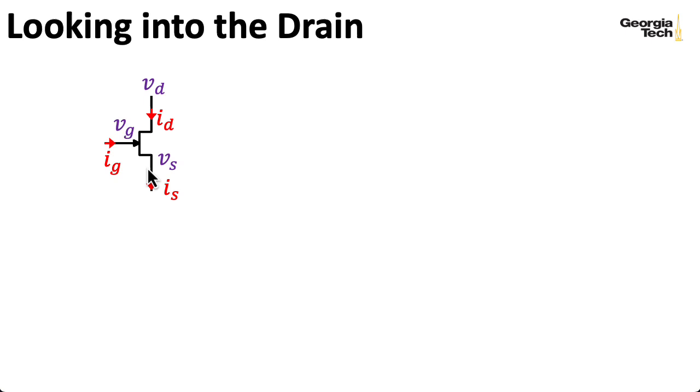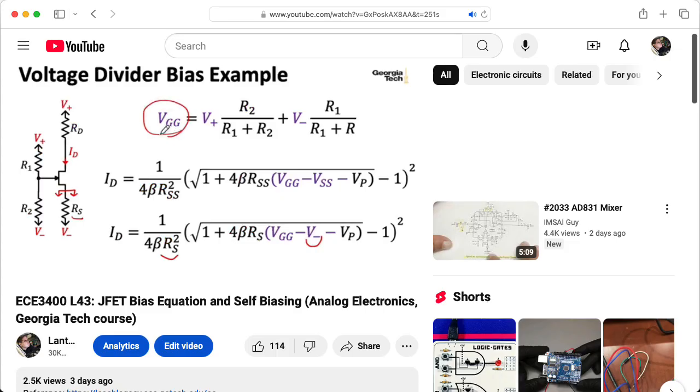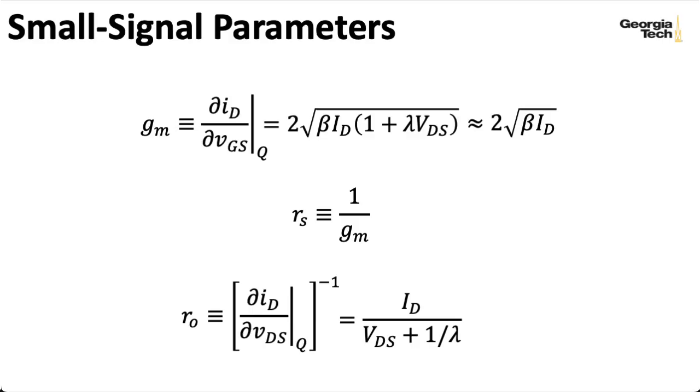Here, this JFET symbol doesn't represent a JFET in its full glory. It's merely representing a small signal circuit. We're assuming you've already analyzed a DC bias circuit, computed the bias currents, so you can compute the small signal parameters.